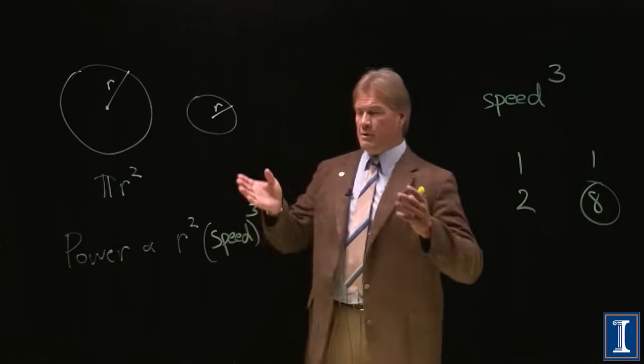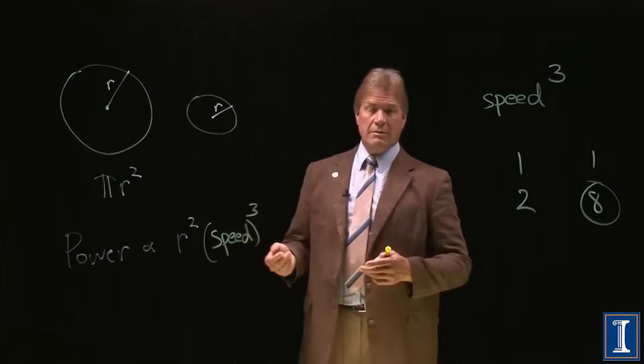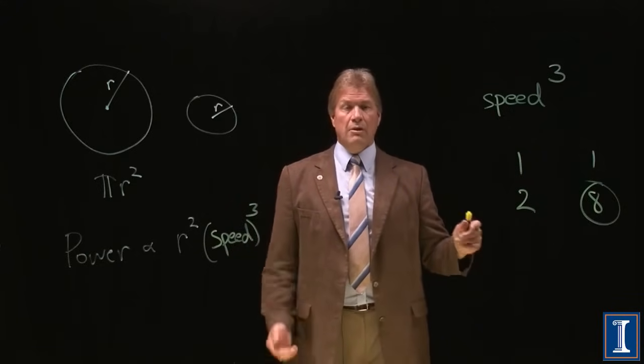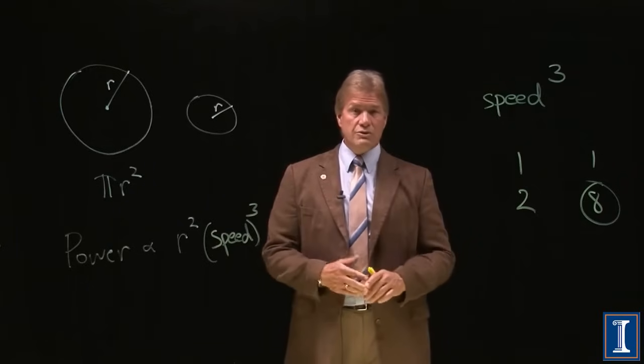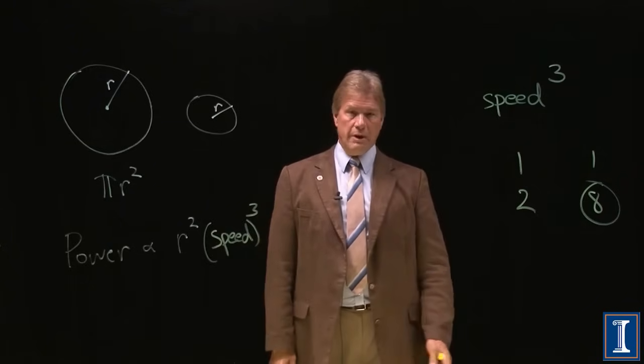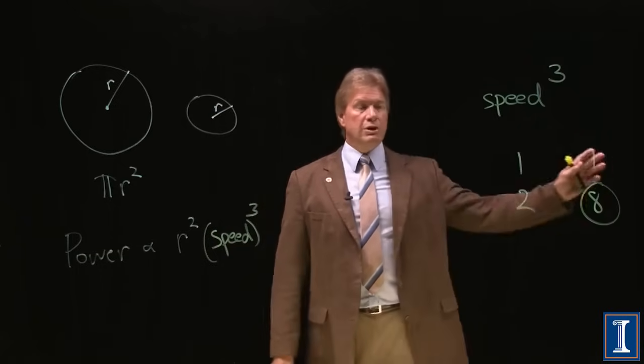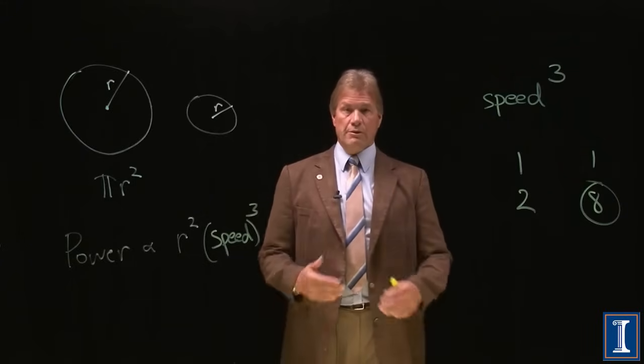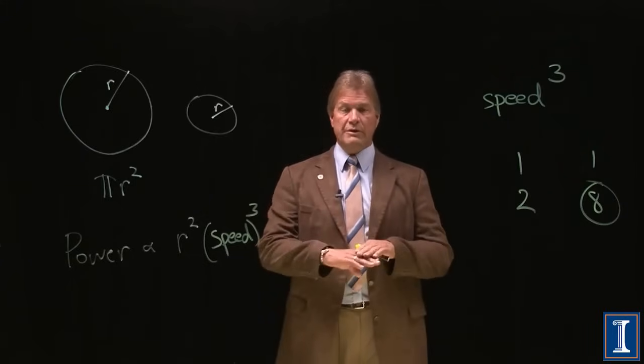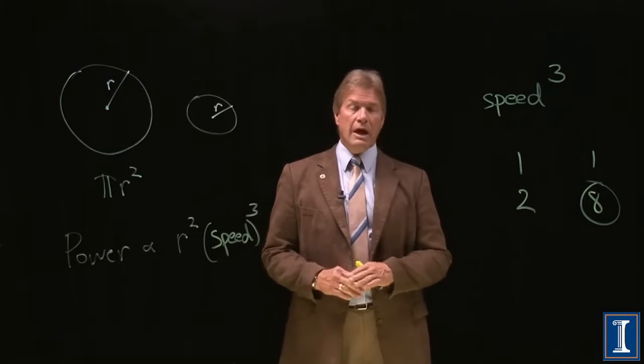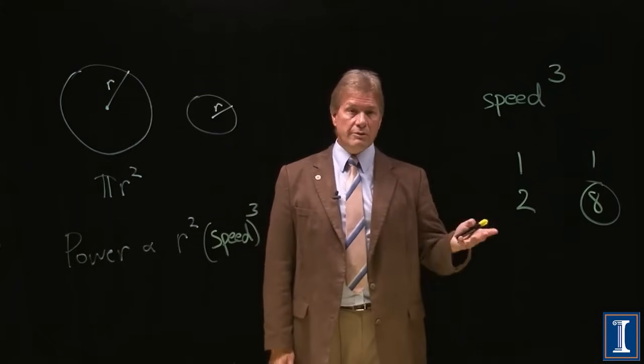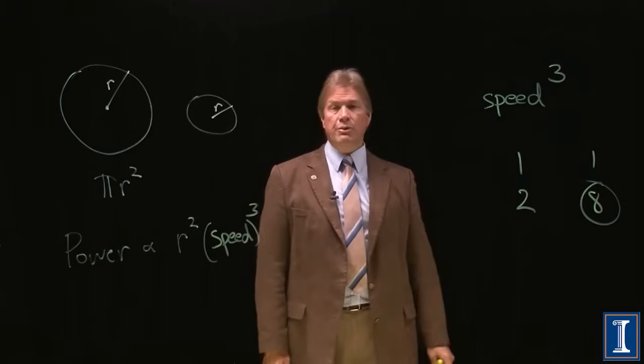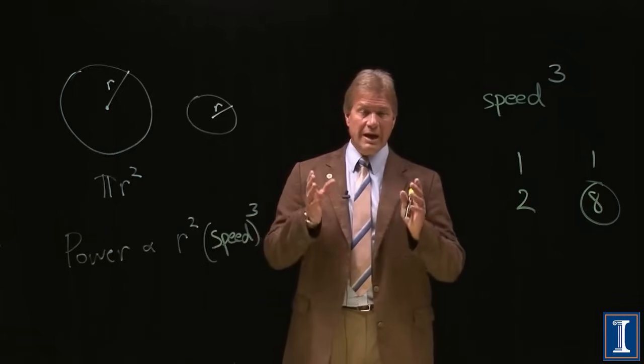So windmills are going to be very large in area, and they are going to want to capture the fastest wind. When you're along the ground, there's no wind blowing at all. The dirt doesn't constantly blow off, occasionally it does, but along the ground there's no wind. The earth is stationary and the wind above it is stationary too. As you go higher and higher up in the air, generally the wind gets faster and faster. Since speed is so important to a windmill, you want to get up high.